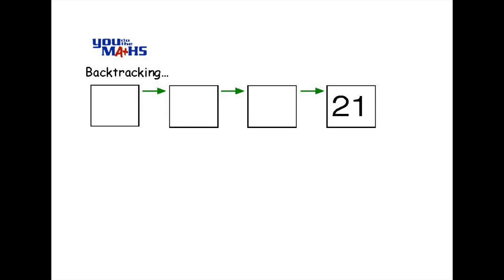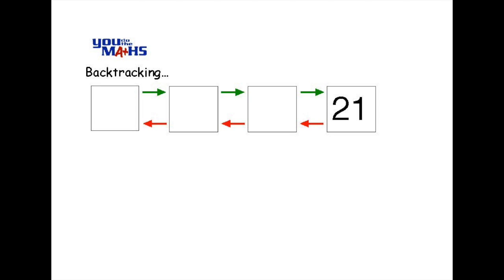Now to solve the problem using backtracking we have to set the boxes up to go backwards as well. So the arrows going in the opposite direction are going to help us solve the backtracking method.